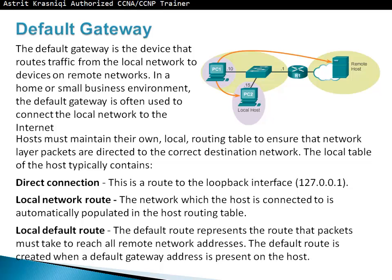The routing table includes a route to the loopback interface 127.0.0.1, local network routes — the network which the host is connected to, automatically populated on the host routing table — and the local default route. The default route represents the route packets must take to reach all remote network addresses. The default route is created when a default gateway address is configured on the host, so the host knows how to send packets anywhere by forwarding them to the gateway.